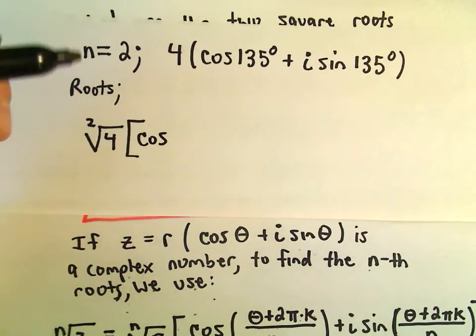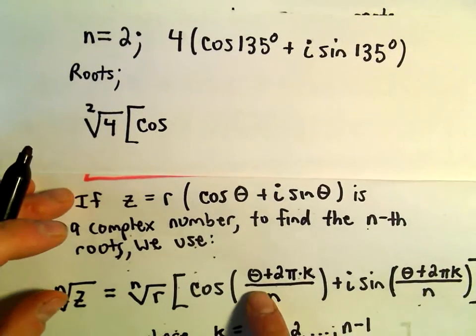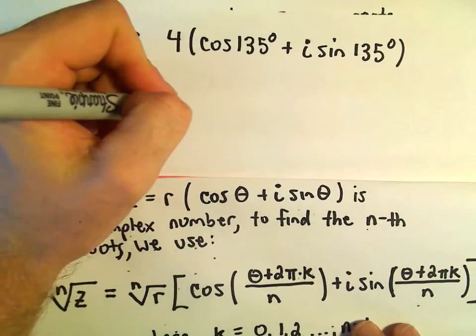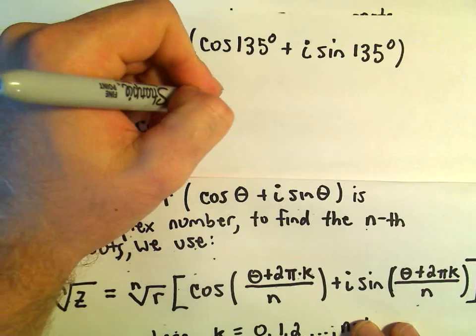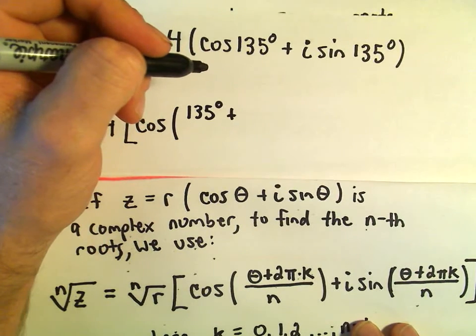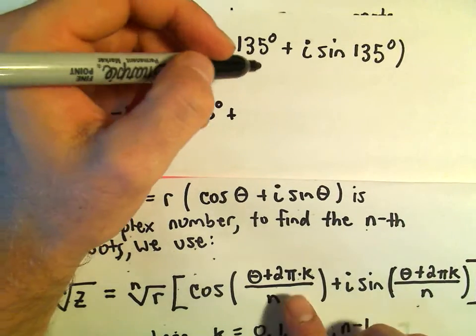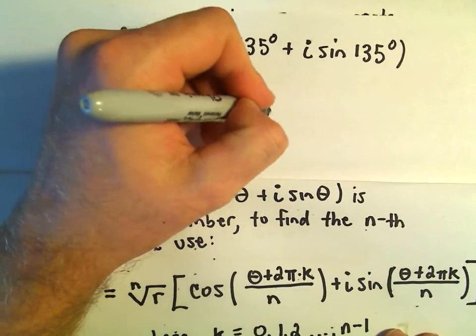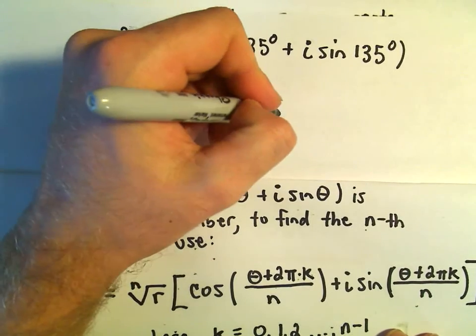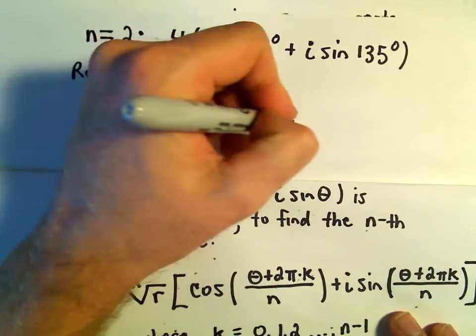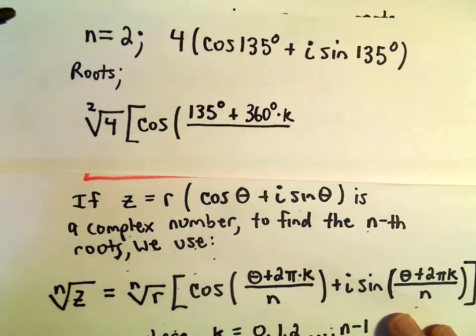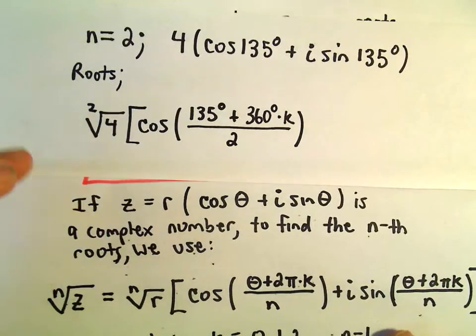And then it says we'll have cosine of the original angle that we started with, which was 135 degrees, plus, let's see, so we'll have 360 degrees times k, all over our n value. And again, we said our n value is going to be 2 in this case.